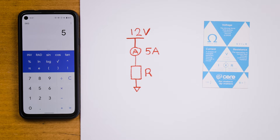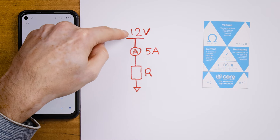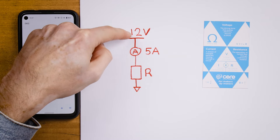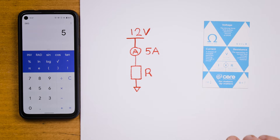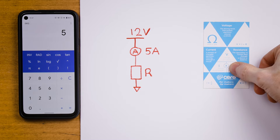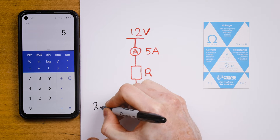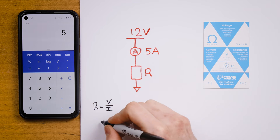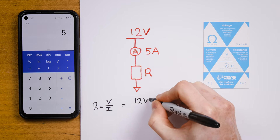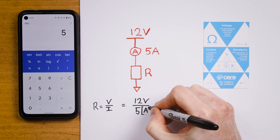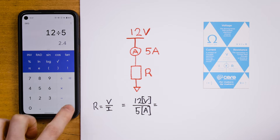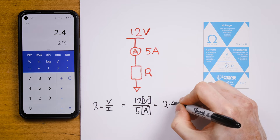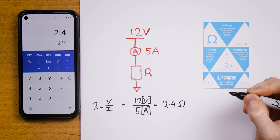Here we can solve for an unknown resistance. Let's say we have a 12 volt power supply and we know that it's providing 5 amps. We can find the resistance by covering R, giving us R equals V on I — that is 12 volts over 5 amps. 12 divided by 5 is 2.4, so that resistor must be 2.4 ohms.